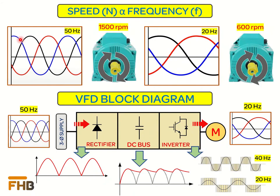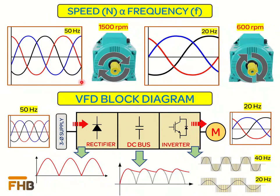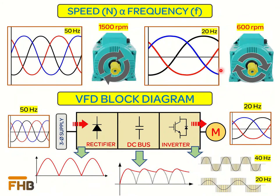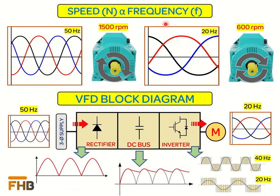If the motor is rated at 50 Hz frequency, then at this frequency the motor will run at its rated speed. In order to decrease the speed of the motor, we need to reduce the frequency of the incoming supply — which in this example is 20 Hz. We can say that a VFD is a controller that controls the speed of an electric motor by varying the frequency of the motor's incoming supply.